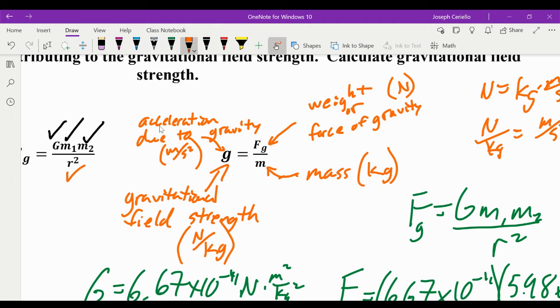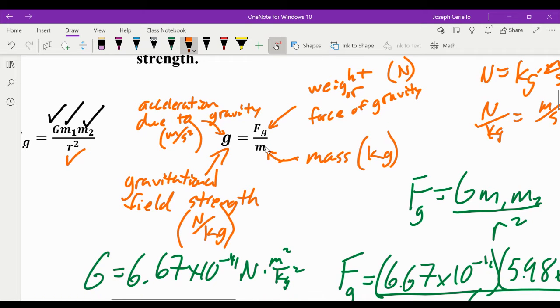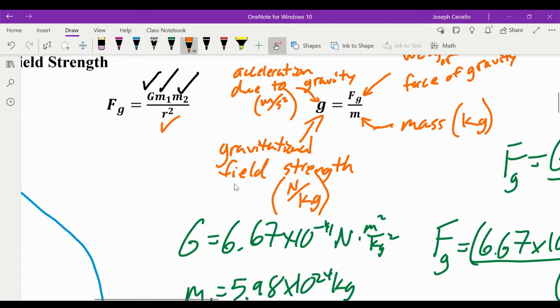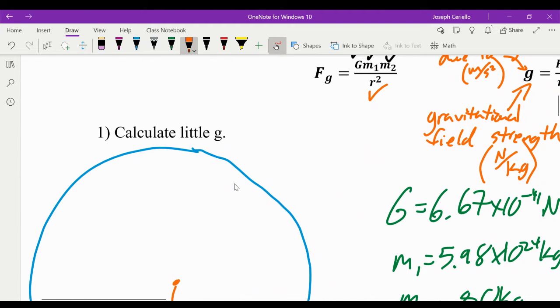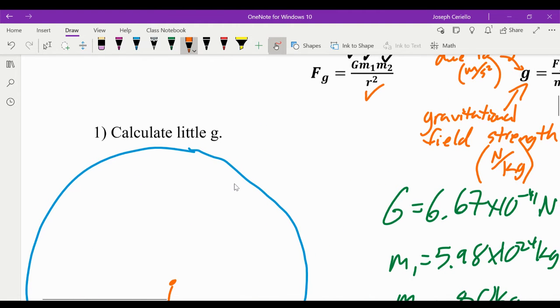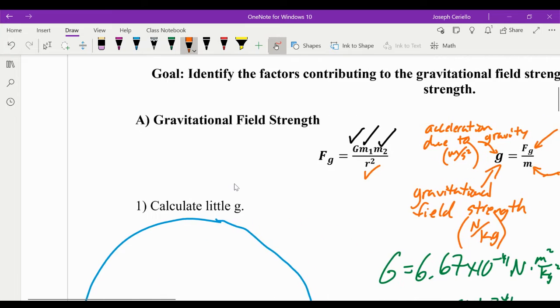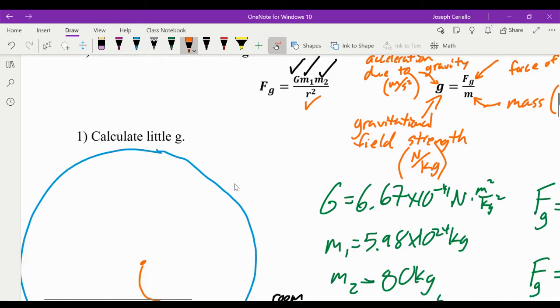Acceleration due to gravity is the ratio of force to mass. Gravitational field strength is the ratio of the force of gravity an object feels to its mass. So let's calculate little g. Again, little g is gravitational field strength. It is also acceleration due to gravity. So we know its value on Earth. We know its value is 9.8 meters per second squared.